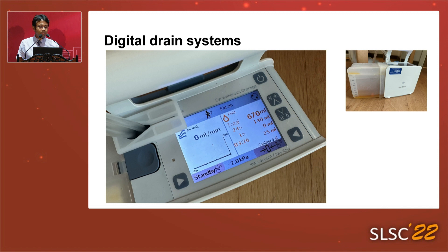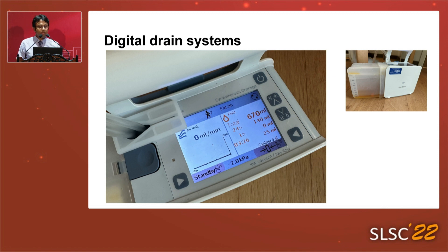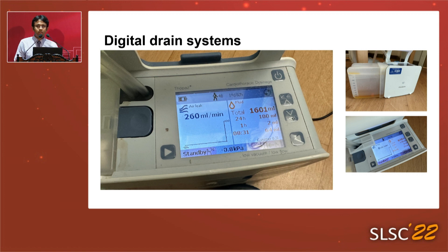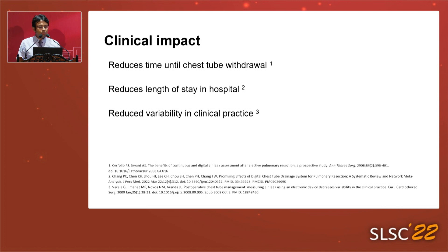The digital drain system interface displays air leak in millilitres per minute, total drainage within 24 hours or per hour, and has a standby function for when you need to change tubing. You can adjust suction pressures digitally — for example, minus 2 kilopascal. In the example shown, an operated patient who underwent lung volume reduction surgery has an air leak of 260 mls per minute, total drainage of 1,601 mls, and is on minus 0.8 kilopascal, which is atmospheric pressure.